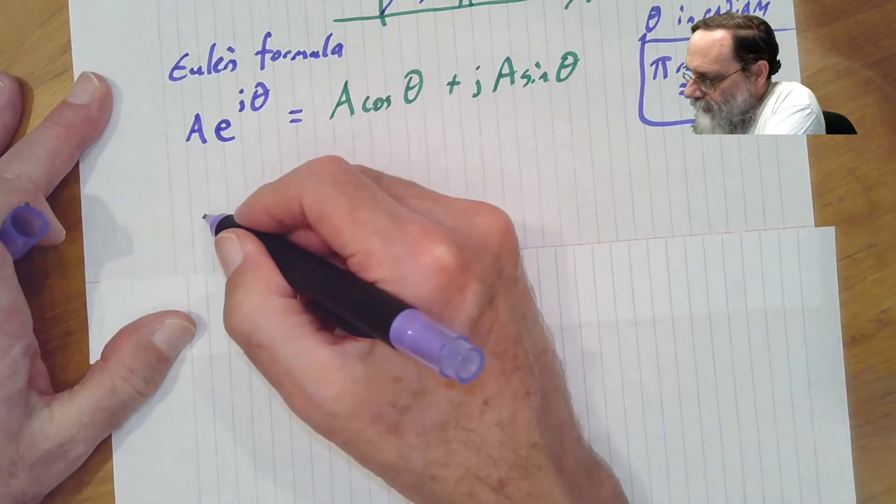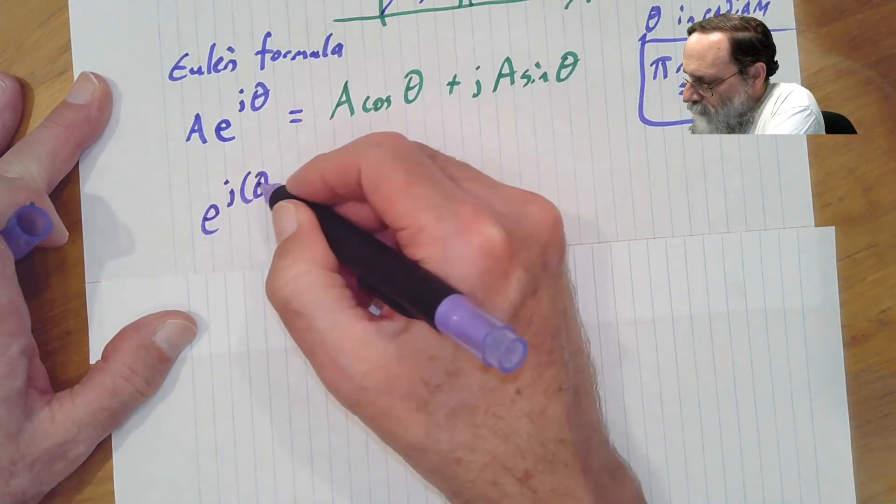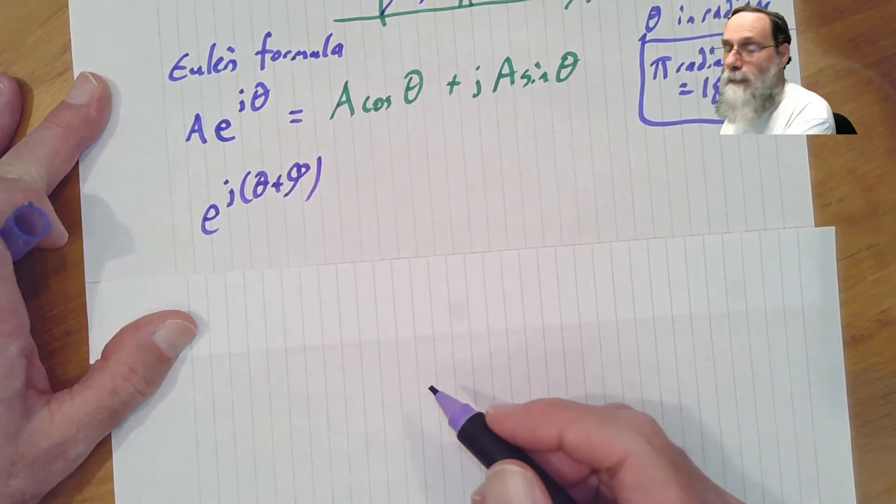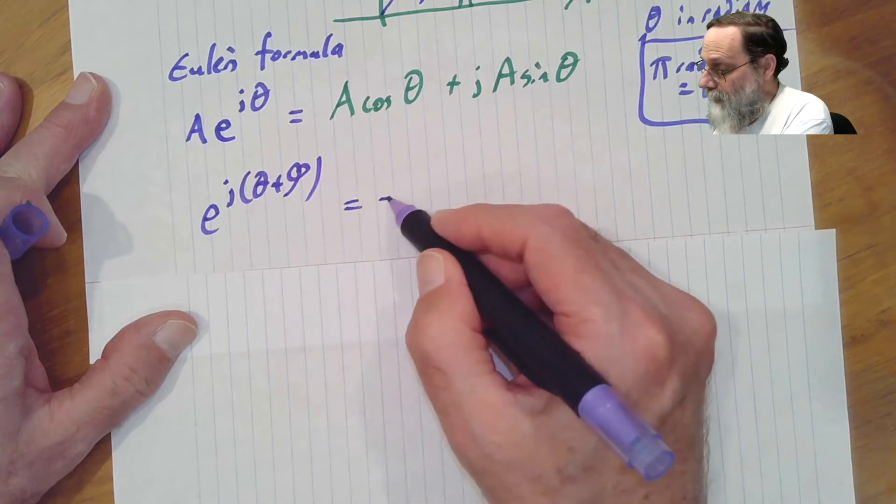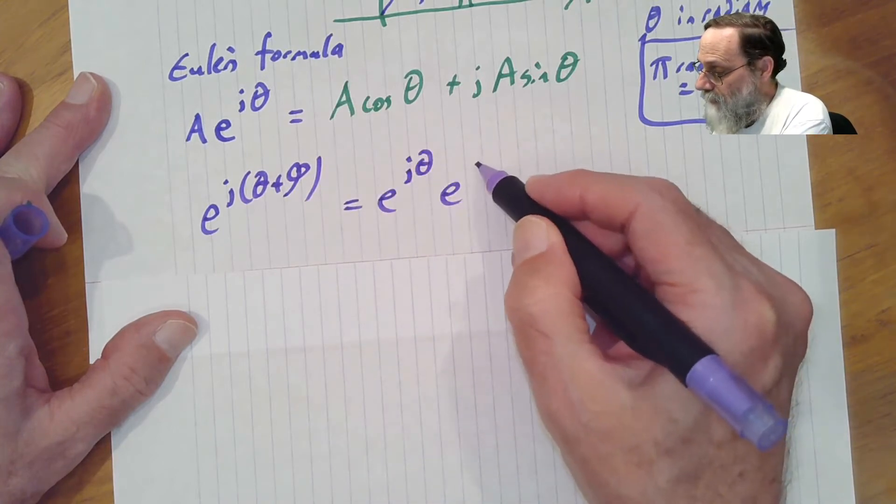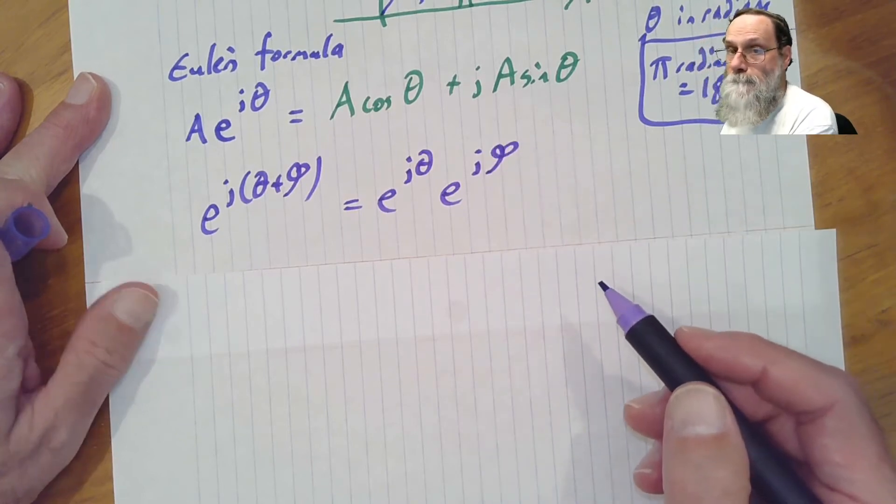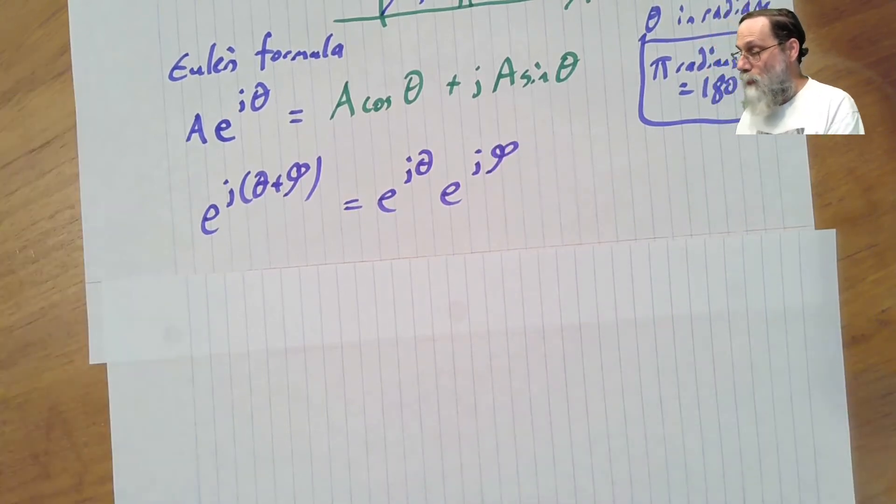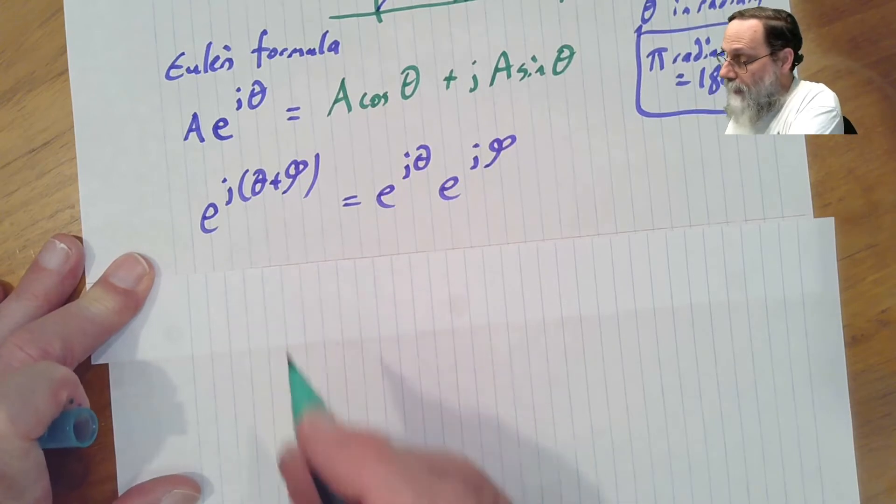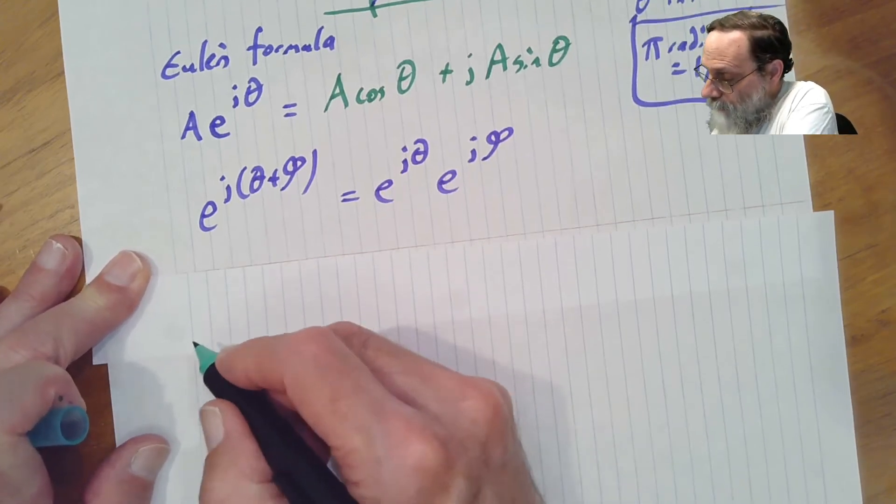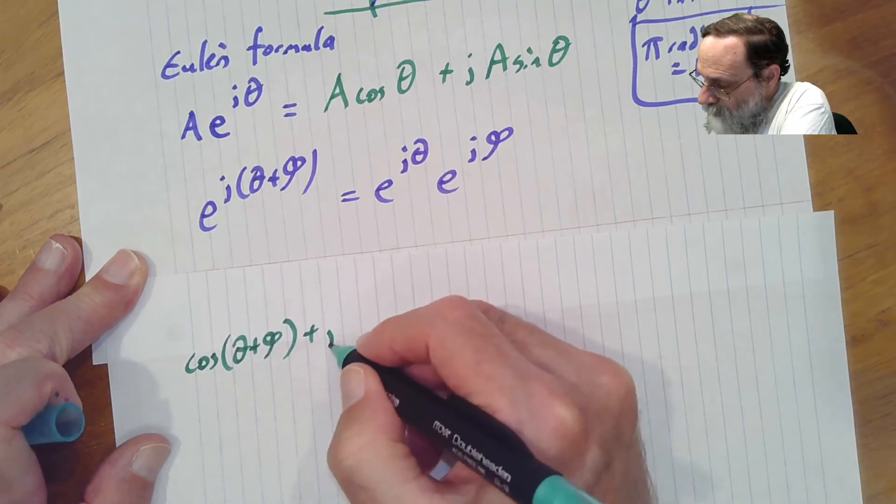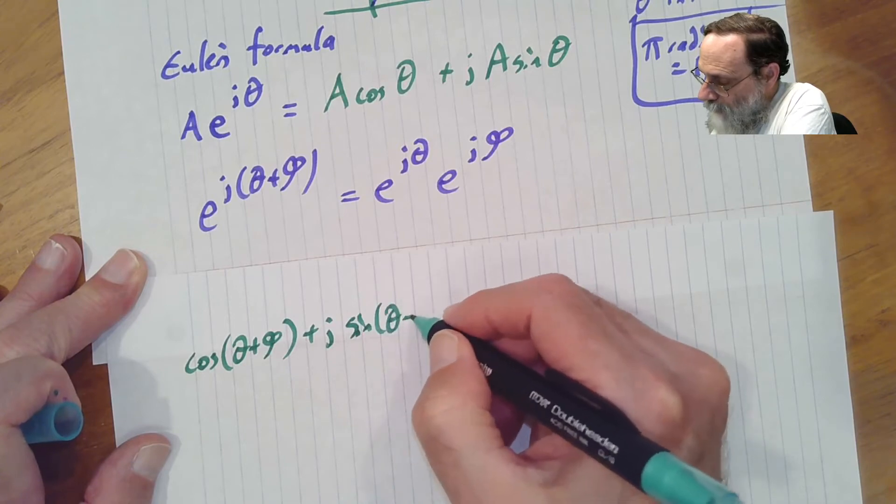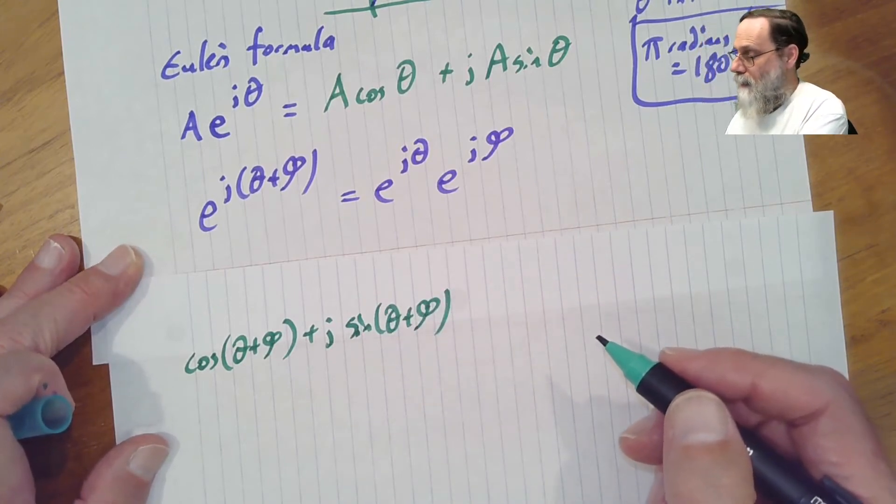Well, just from the definition of exponentiation, we can get that this is e to the j theta times e to the j phi. We can do conversion on each side here into Cartesian coordinates. Taking the left-hand side there, we're going to get cosine of theta plus phi plus j times sine of theta plus phi.